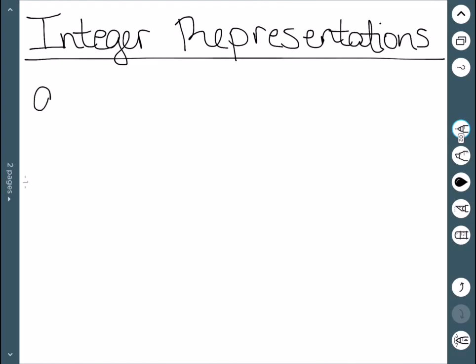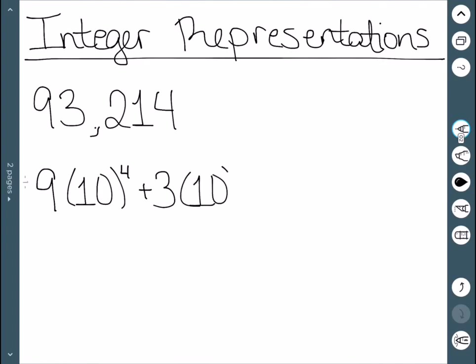Kind of the idea, if I have this number 93,214 in base 10, what this really represents is 9 times 10 to the 4th plus 3 times 10 cubed plus 2 times 10 squared plus 1 times 10 plus 4.